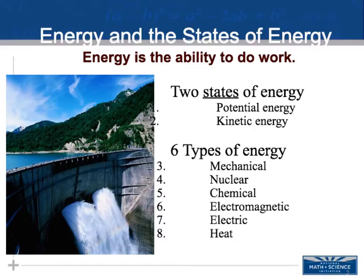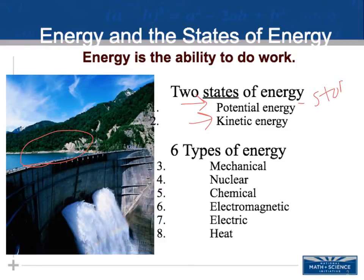Our two different states of energy, or forms energy can be in, are potential energy or kinetic energy. Potential energy is that stored energy. If you look at the picture, you can see the energy trapped in the water behind the dam — that would be a source of potential energy. It is stored and available for use.